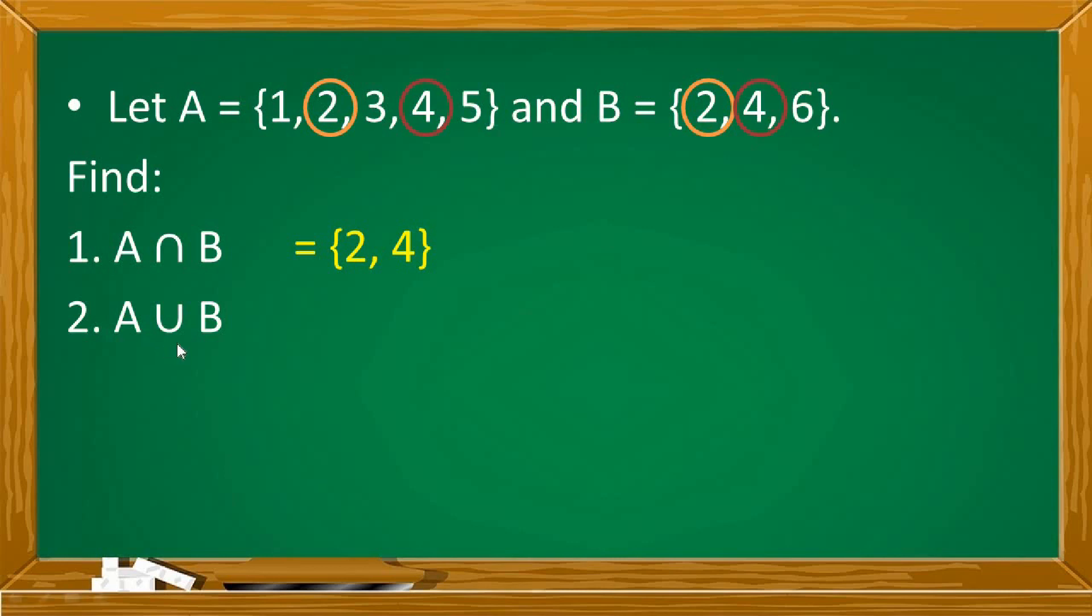Next, number 2. How about the union? We're going to combine or pagsasamahin lang natin lahat ng elements ng dalawang set. At bawal na may mauulit. Set A has 1, 2, 3, 4, and 5. Set B has 2, 4, and 6.